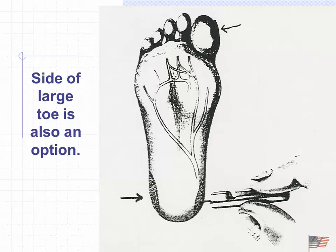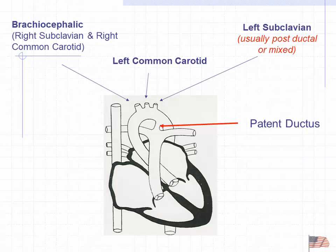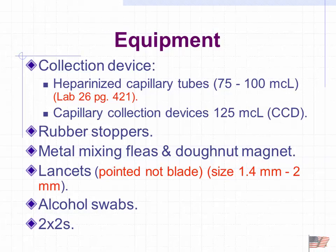We could also use the large toe. With the patent ductus arteriosus still open, we want to use a branch of the right subclavian or right common carotid as our pre-ductal reference. We collect blood into a capillary tube — not a syringe — and the tubes are typically heparinized. We also have little metal pieces called fleas and a magnet, plus a lancet, alcohol swab, and a two-by-two gauze pad to stop the bleeding.